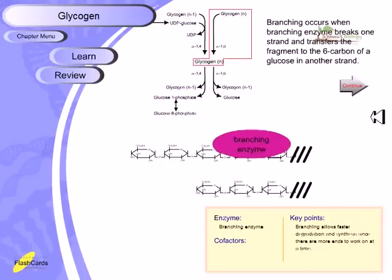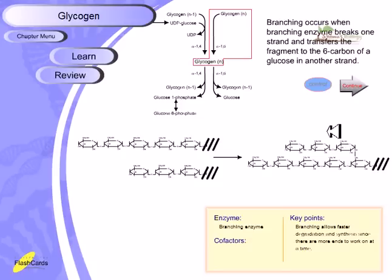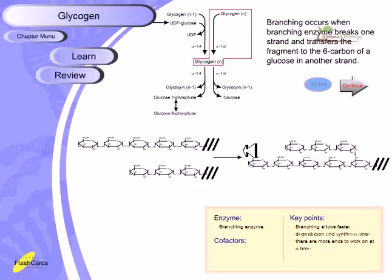Branching occurs when the branching enzyme breaks one strand and transfers the fragment to the C6 carbon of a glucose on another strand via an alpha-1,6 linkage, creating a branch point. Similarly, a debranching enzyme is responsible for removing branches during glycogen degradation. The key point is that branching allows faster degradation and synthesis, since there are more ends to work on at a time.